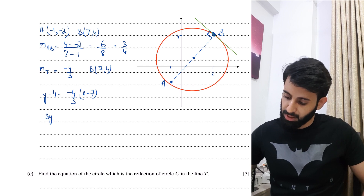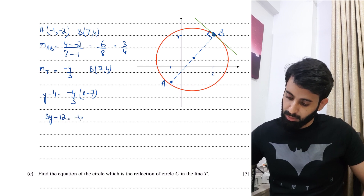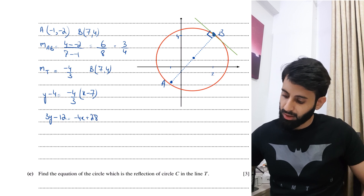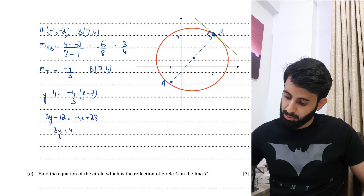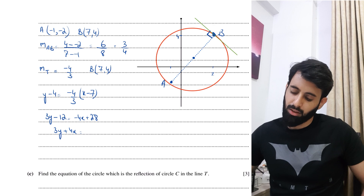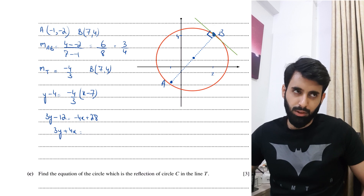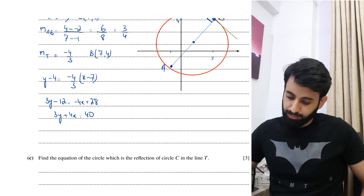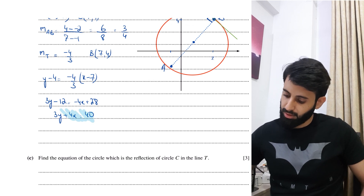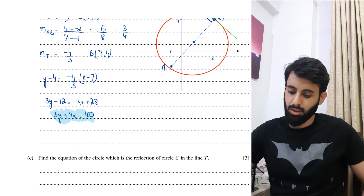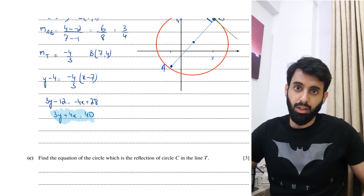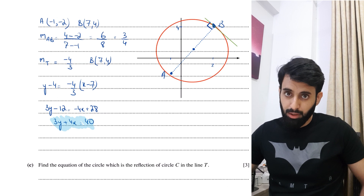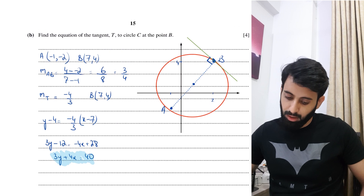Cross-multiplying: 3y minus 12 equals minus 4x plus 28. Rearranging: 4x plus 3y equals 40. This is the equation of the tangent to the circle at point B.